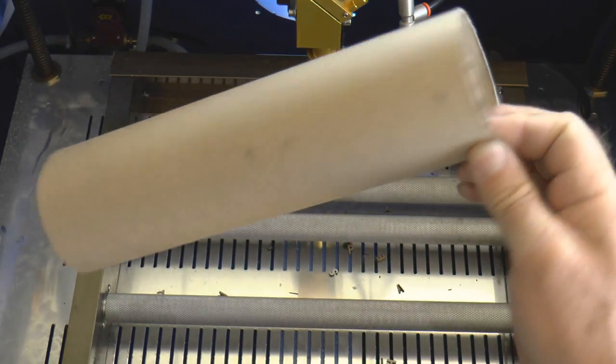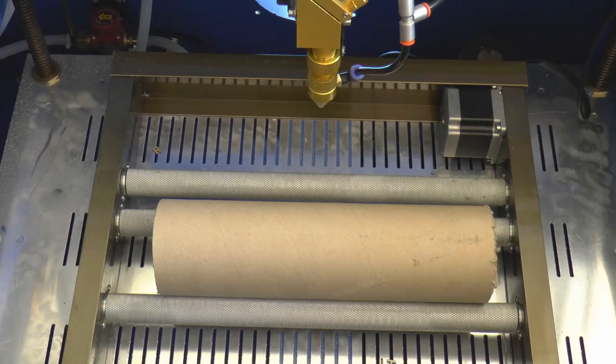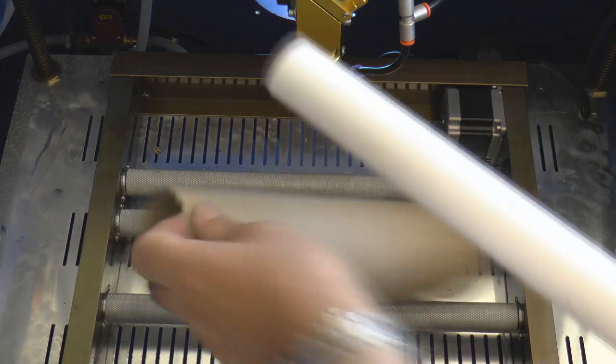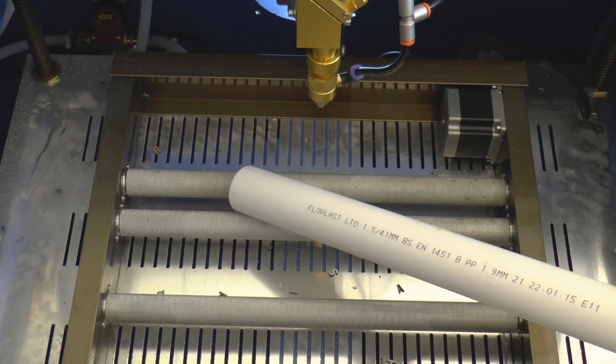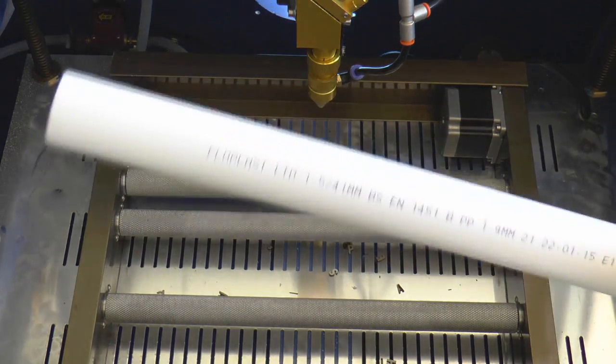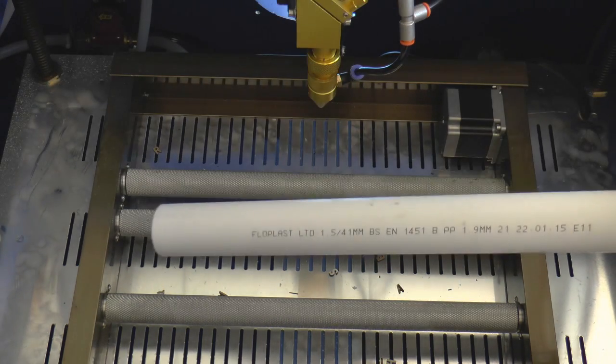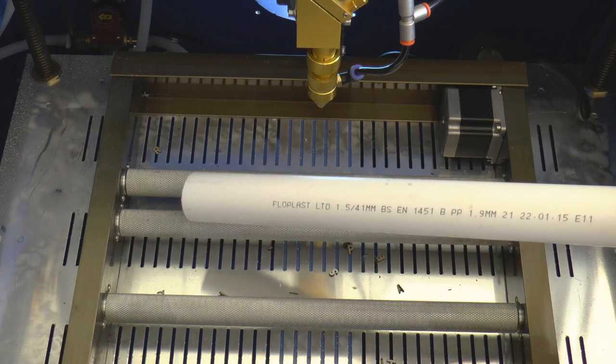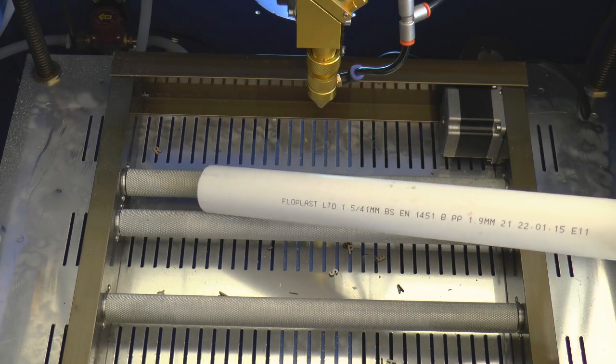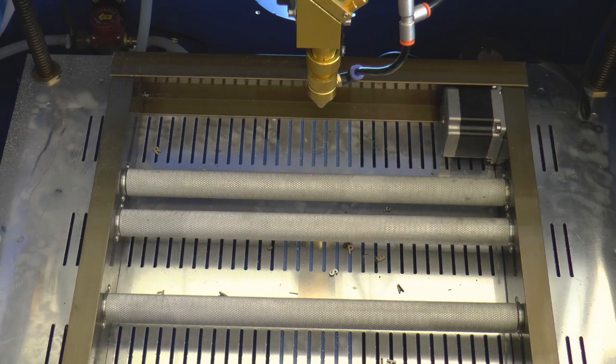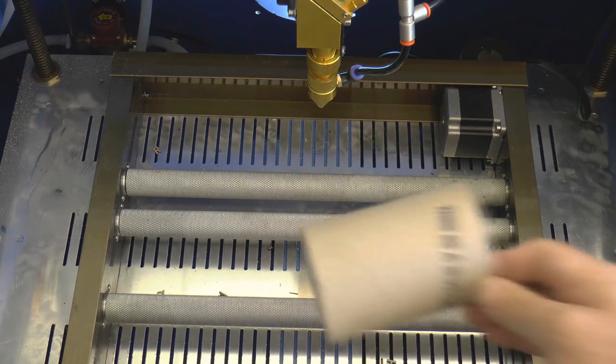Whatever you do, don't be tempted to use something like this which is a piece of drainage pipe, because this is a PVC type pipe and it produces nasty fumes as we've mentioned in some other sessions. What we're going to try and achieve in this session is something like this.